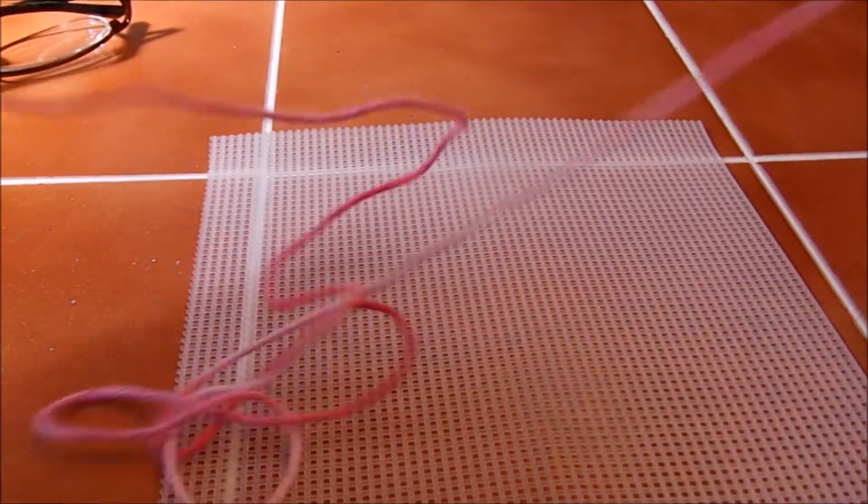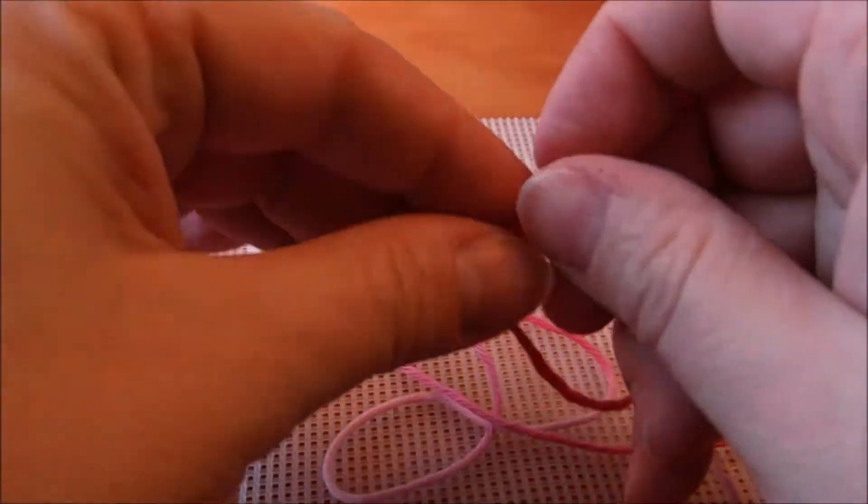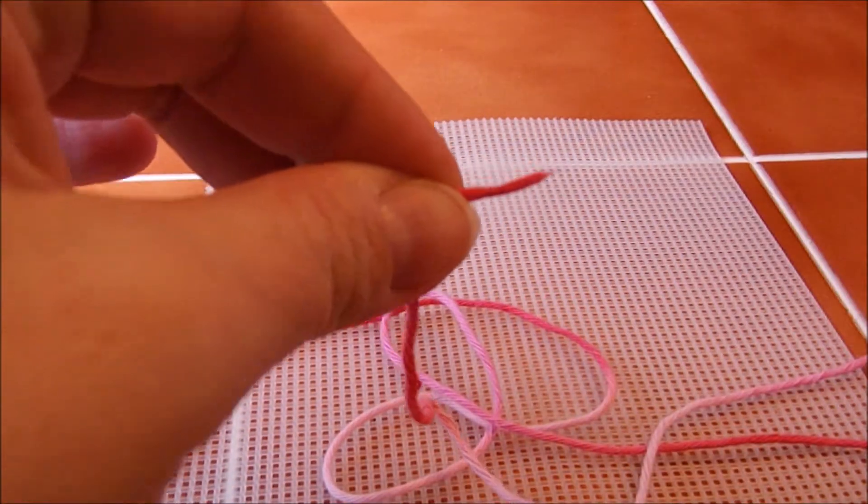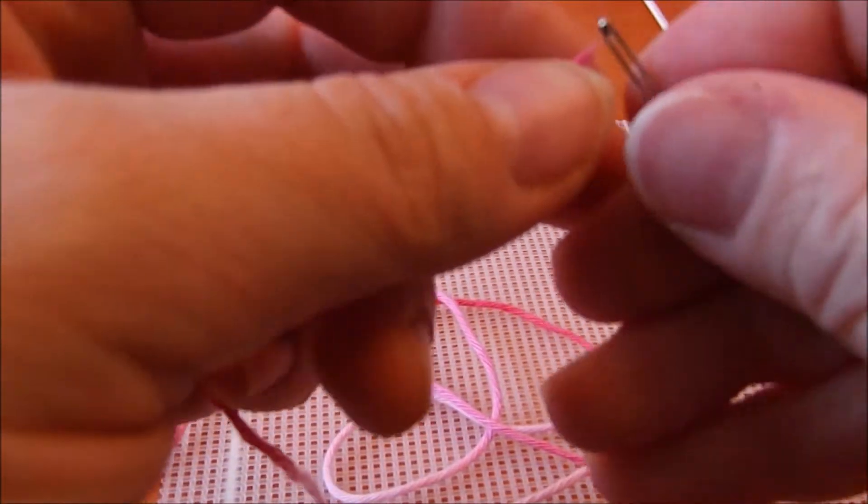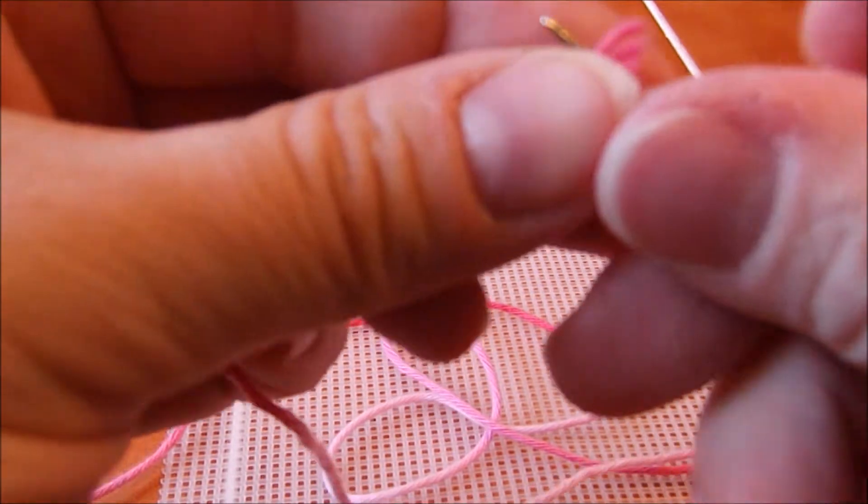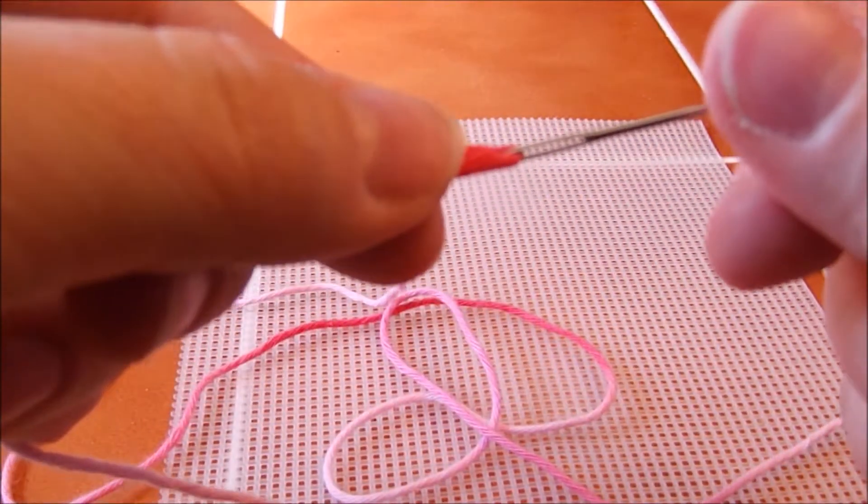So you want to cut about an arm's length of yarn, it says. And then I wet the end that I'm going to pass through the needle with my spit. I know, that's lovely, isn't it? But it does make it pass through the eye of the needle fairly easily.